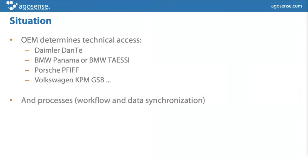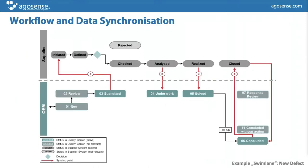The OEMs also usually determine the processes and workflows — on which rules the data should be synchronized. As an example, you have your own individual workflow in your tool, such as Jira or Integrity, and you have to align that workflow with different exit points where you need to exchange data with the OEM's workflow. This is something that can be easily done in Symphony.